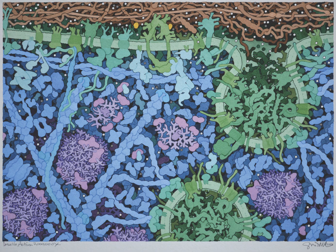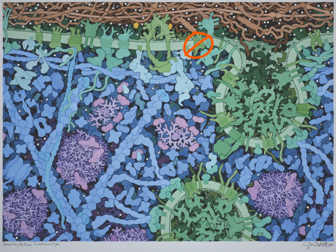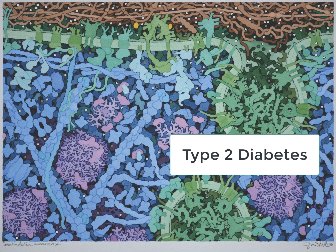Insulin signaling is a rather complex process involving many proteins that talk to each other inside the cell. If any of these proteins are either missing or not functioning properly, the signal that tells the glucose transporter to come up to the cell surface is blocked. The net result is the cell is unable to utilize glucose, and this can lead to type 2 diabetes, or insulin-independent diabetes.